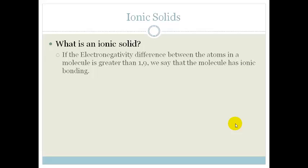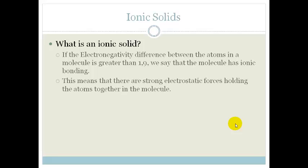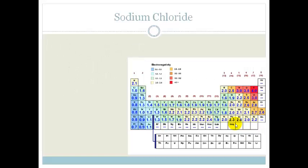In the last lesson we learned about electronegativity and we realized that electronegativity was a measure of how strongly an atom holds onto its own electrons and attracts other electrons to it. If the electronegativity difference between the atoms in the molecule is greater than 1.9, we say that the molecule has ionic bonding. That means that there are very strong electrostatic forces holding the atoms together in the molecule.